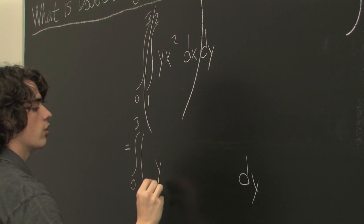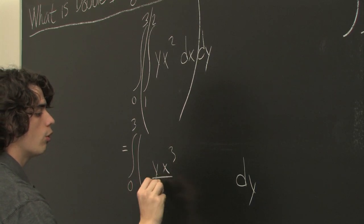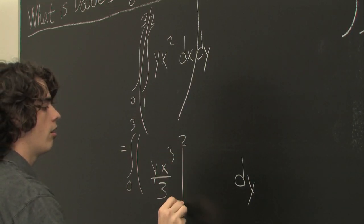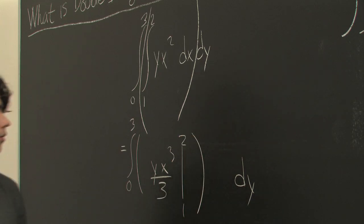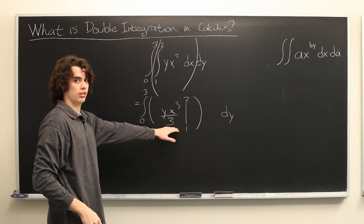So it should give us yx³ over three from one to two. And whatever this is we'll plug it into that integral. So let's compute this.